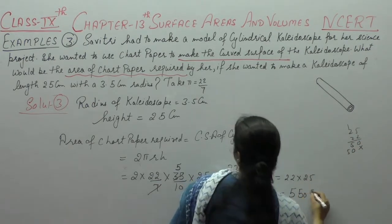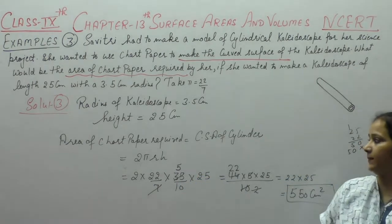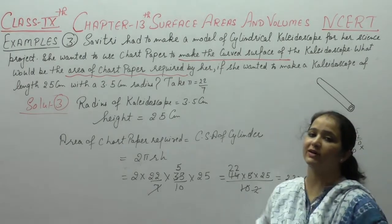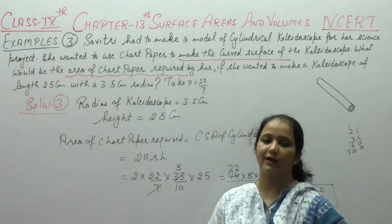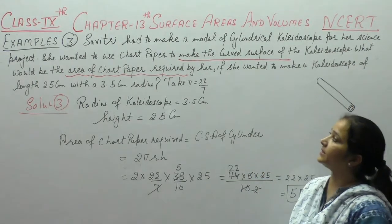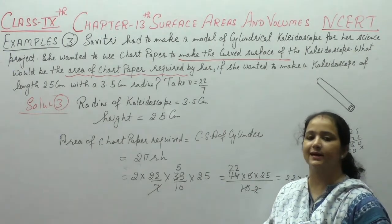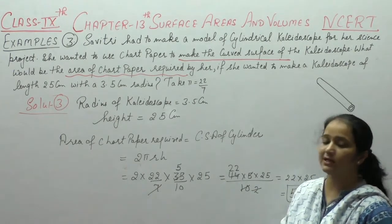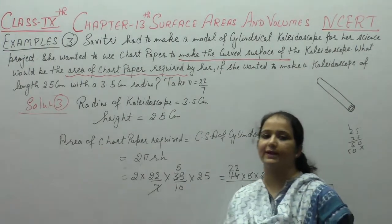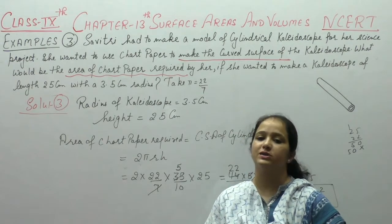550 cm square. This area of chart paper must be 550 cm square to cover the curved portion of the cylinder. This is a kaleidoscope. I will tell you again. Savitri has a project, a model. This is a cylindrical kaleidoscope for the project. She wanted to use chart paper to make the curved surface. Curved surface is the chart paper use. How much area will be used to use the chart paper?